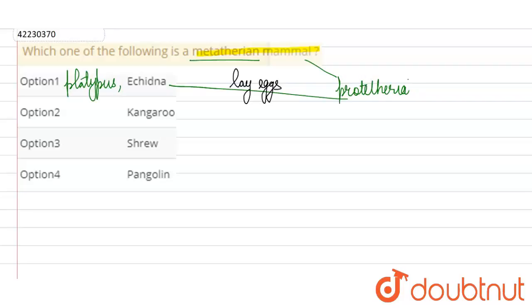The second group we have is Metatheria, which we have asked for in the question. We place all marsupial mammals in this group.